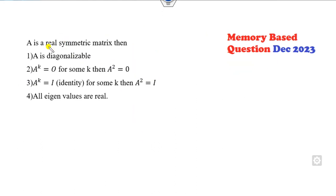Look at this another one. A is a real symmetric matrix. What does it mean? You can consider any real symmetric matrix - say A equals I. We all know every real symmetric matrix is diagonalizable. Whenever it's a real matrix, eigenvalues are always positive and real, so this option is also correct.